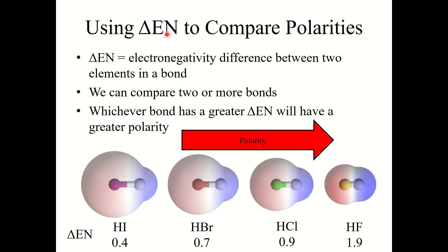We can use electronegativity difference values to compare the polarity of two or more bonds — whichever bond has the greater electronegativity difference will have greater polarity. For example, looking at the four hydrogen-halogen bonds: H-I, H-Br, H-Cl, and H-F. The bonds get more polar as the halogen becomes more electronegative. Fluorine is the most electronegative of the four, then chlorine, then bromine, then iodine. So the H-F bond is the most polar because it has the biggest electronegativity difference.